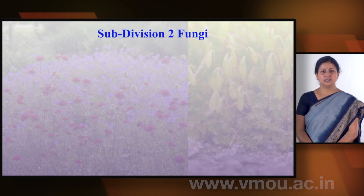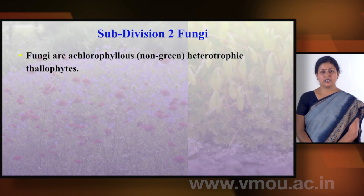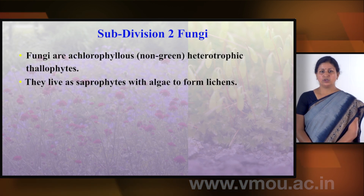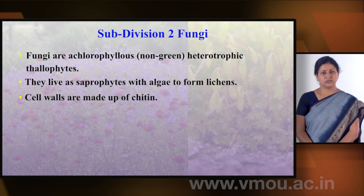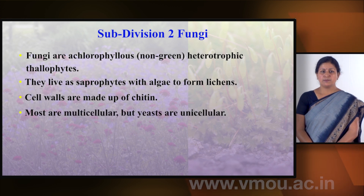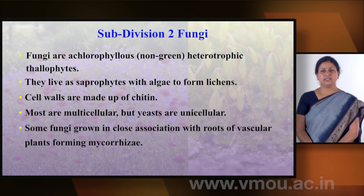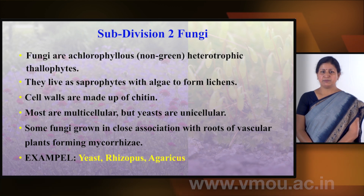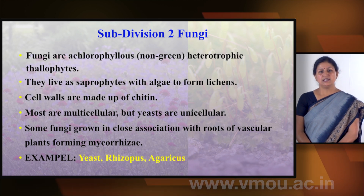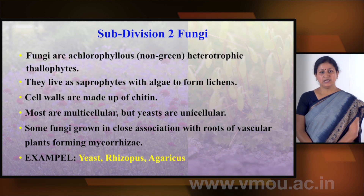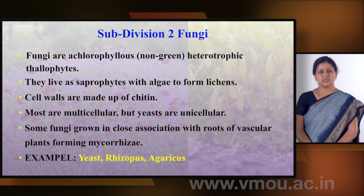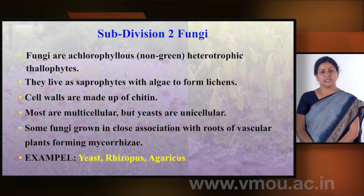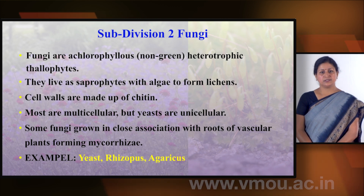The second sub-division is fungi. Fungi are achlorophyllous, meaning chlorophyll is not found. This is why they are heterotrophs — they are found as saprophytes, and also in symbiosis with algae forming lichens. The cell wall is made of chitin. They are mostly multicellular; yeast is unicellular. Some fungi form mycorrhizal associations with roots. Examples are yeast, Rhizopus, and Agaricus.